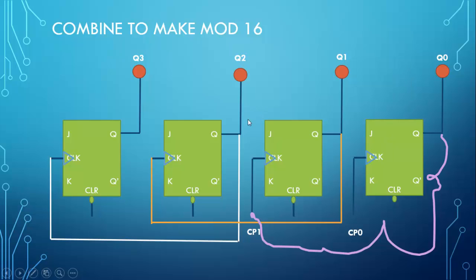It will count from 0 to 15. The one the clock goes into here, this is our least significant bit. This is our most significant bit. So this is the ones place, the two place, the four place, the eight place.